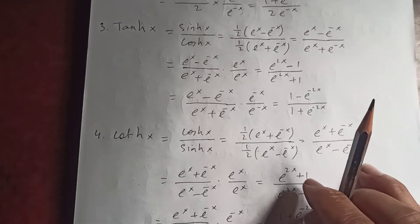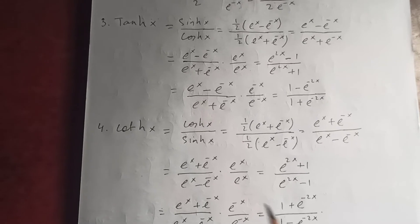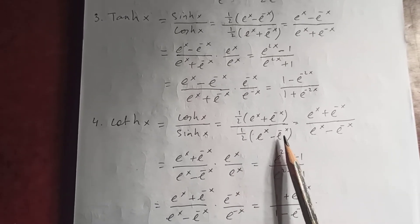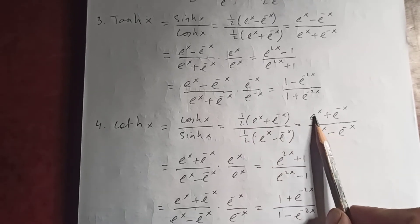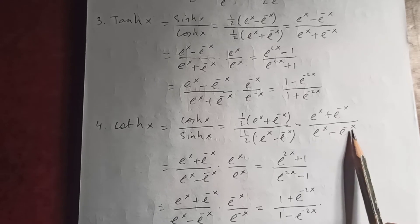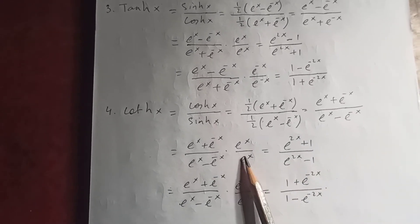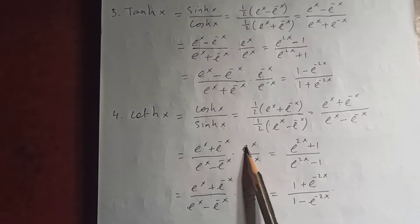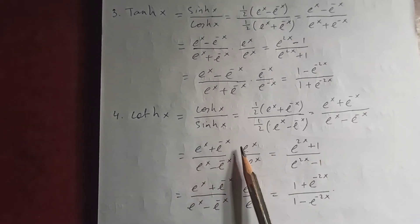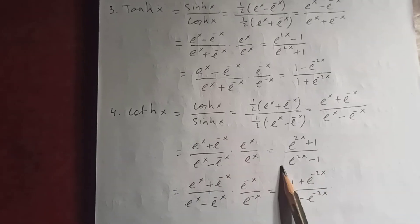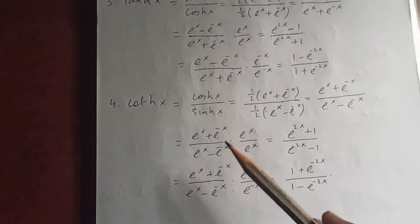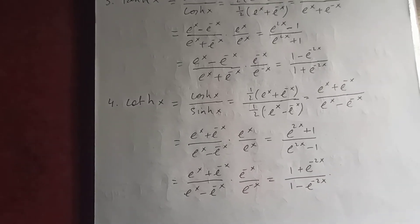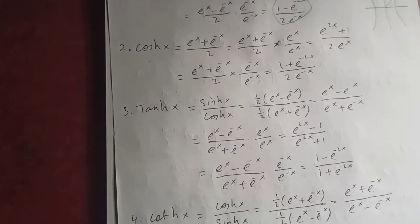Coth hyperbolic of x is cosh divided by sinh — (e to the x plus e to the negative x) upon (e to the x minus e to the negative x), after the halves cancel. Multiplying numerator and denominator by e to the x gives (e to the 2x plus 1) upon (e to the 2x minus 1). Multiplying by e to the negative x gives (1 plus e to the negative 2x) upon (1 minus e to the negative 2x).